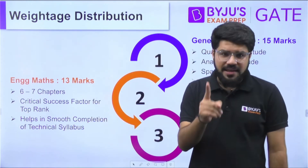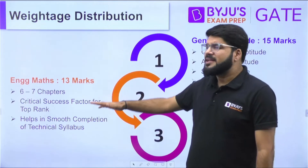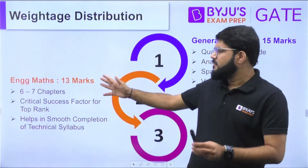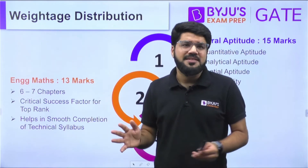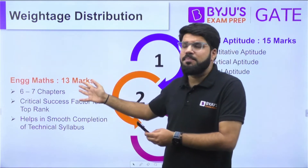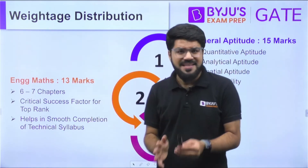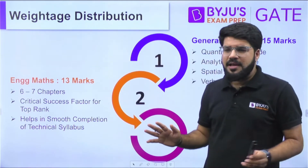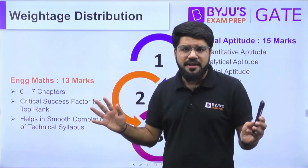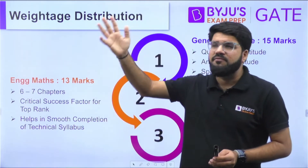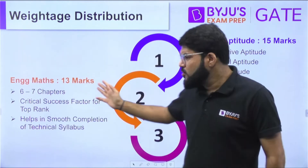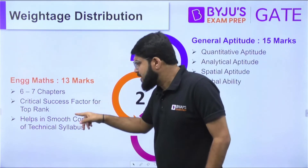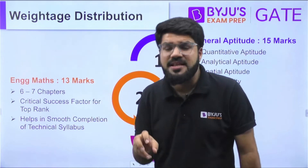Engineering Mathematics is a critical success factor for top rank. Many students feel they should focus more on technical subjects and leave maths for last, but then they are not able to manage time. It is a moderate-level subject that requires basic effort — you can't discard it unless you are really strong in engineering mathematics from college (M1, M2, M3, M4). So you have to take care of this subject.